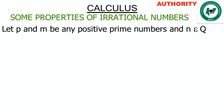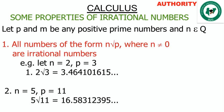Property one: all numbers of the form n root p — that is the nth root of p — where n is not equal to zero and p is a prime number, are called irrational numbers.